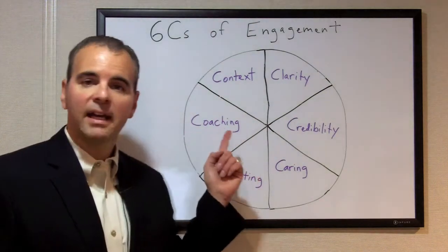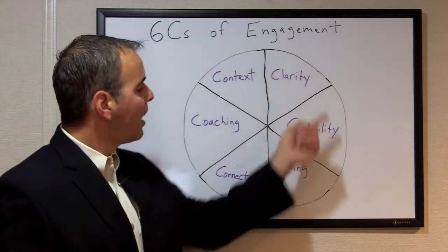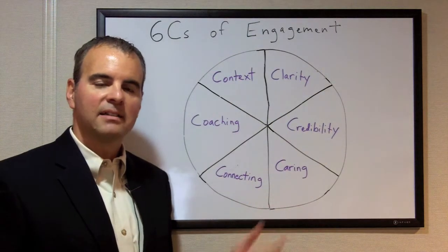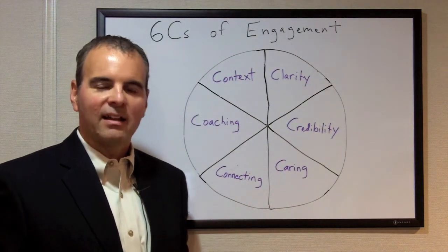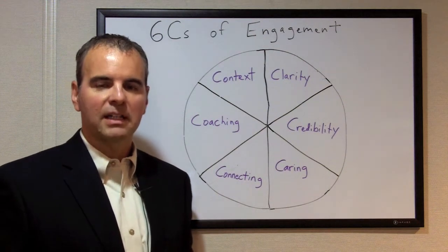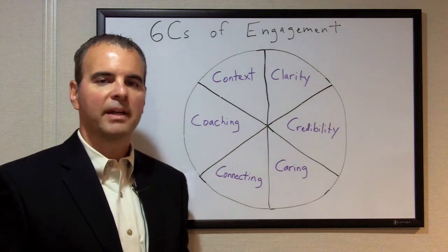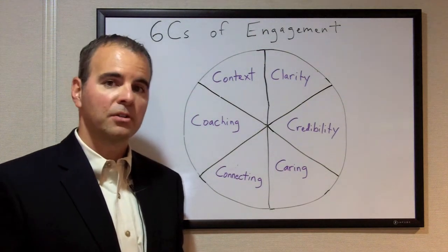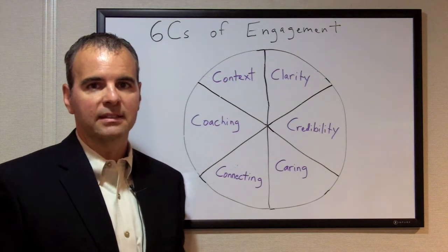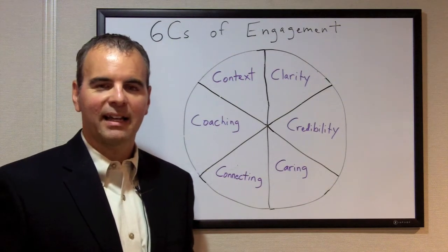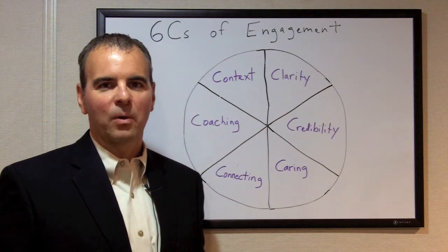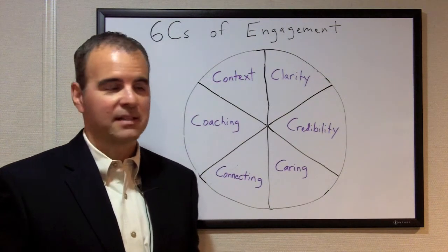In this pie chart, all six of the six C's are the same size. That's to represent that all six are equally important. I don't think we can really be effective if we only place a priority on one or two, or if we skip one or two of these six C's. We're going to find our leadership is lacking and that people don't find us all that worthy of being followed as a leader.